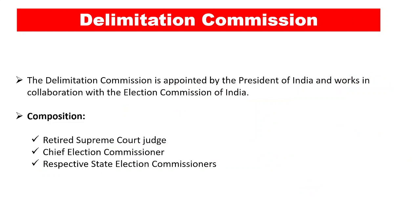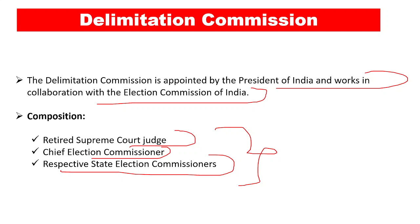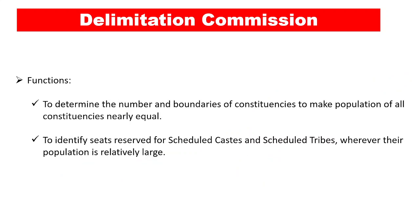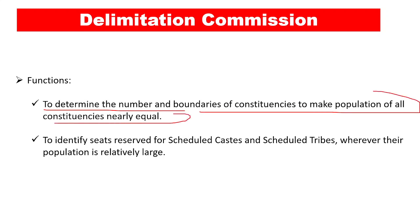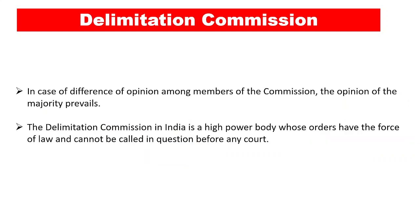The delimitation commission is appointed by the President of India and works in collaboration with the Election Commission of India. In terms of composition, it has a retired Supreme Court judge, the Chief Election Commissioner, and the respective state election commissioner — these three people form the delimitation commission. Its functions are to determine the number and boundaries of constituencies to make the population of all constituencies nearly equal, and to identify seats reserved for Scheduled Castes and Scheduled Tribes wherever their population is relatively large.